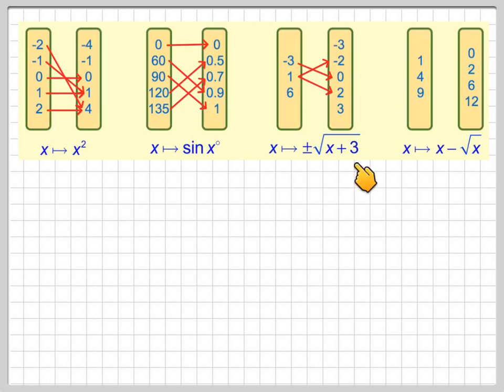6 plus 3 makes 9. Square root of 9 is 3. We've got plus or minus, so 6 can go to two things as well: minus 3 or 3.